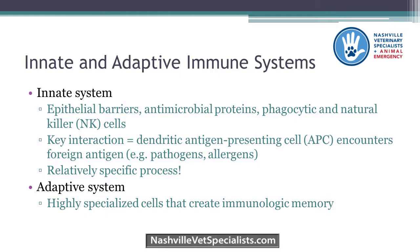It's actually a pretty specific process. We used to think skin blocks things, mucous membranes block things, the respiratory tract blocks things — but it's a lot more specific than that. The adaptive immune system has highly specialized cells and creates immunologic memory, which is great for preventing future disease but not great for allergy.